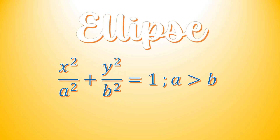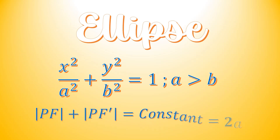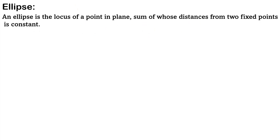Let's take the standard ellipse x squared over a squared plus y squared over b squared equals 1, where a is greater than b. With usual notation, we know that the sum PF plus PF' is equal to a constant for this ellipse. In this video, we are going to find out why this constant is equal to 2a.